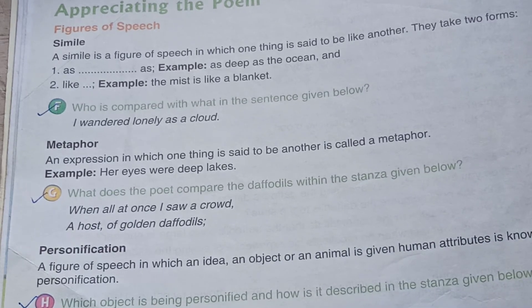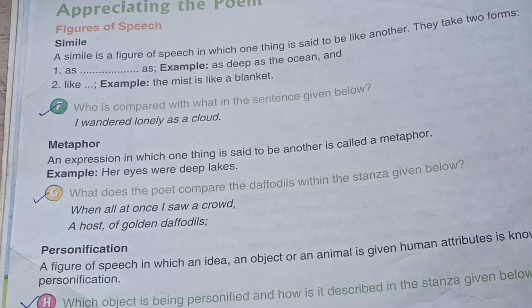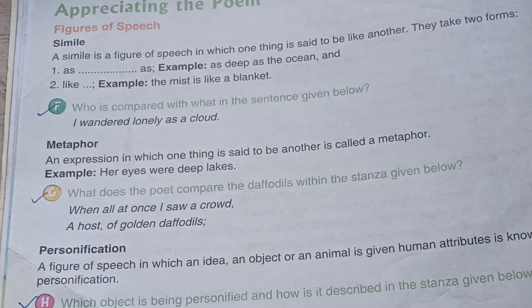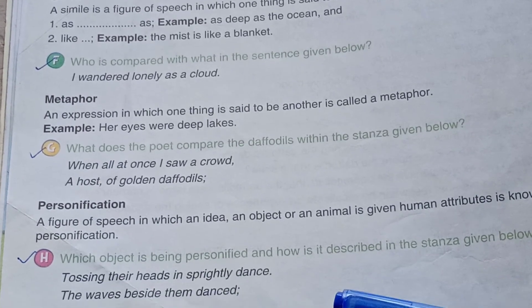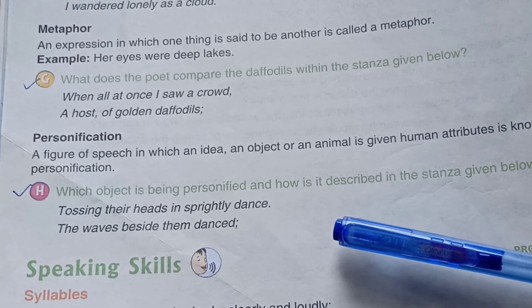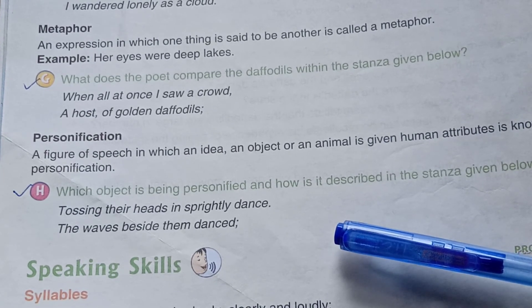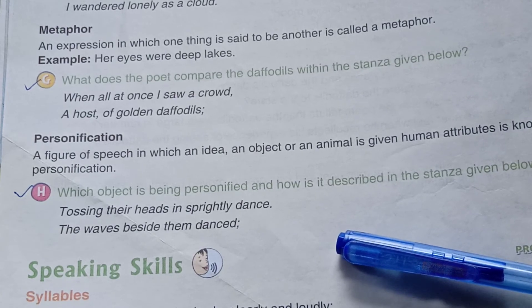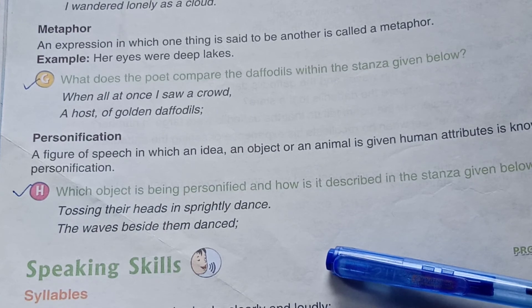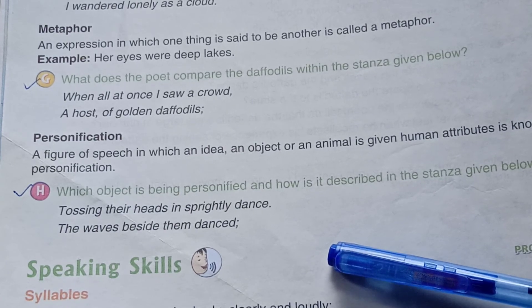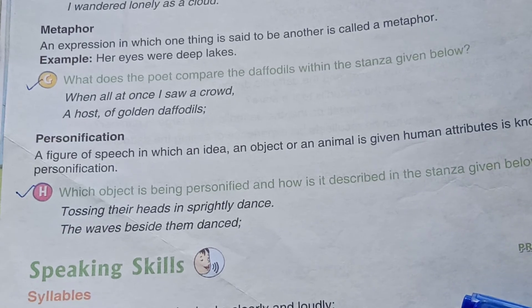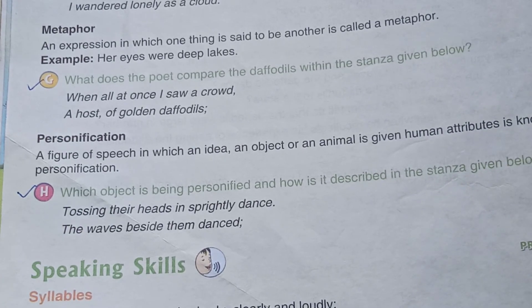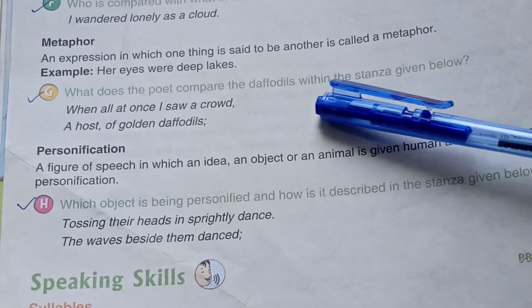Which object is being personified and how is it described in the stanza given below? 'Tossing their heads' — the waves beside them danced. The answer is: the daffodils are being personified in this stanza. These are the exercises which you have to do in your book only. You can write the answers here in this space.